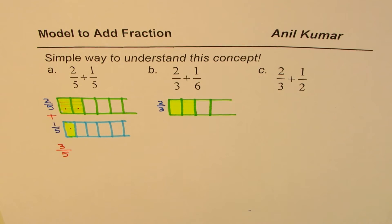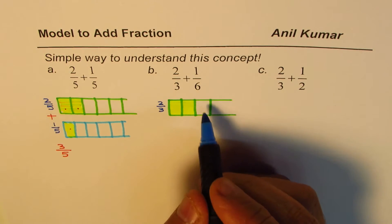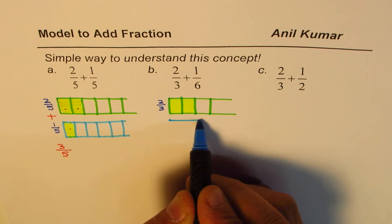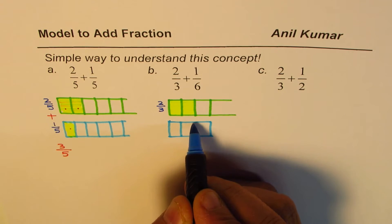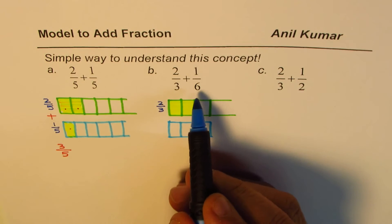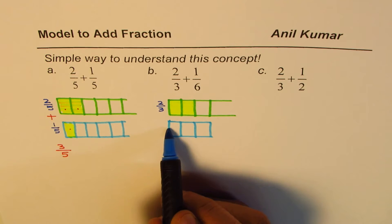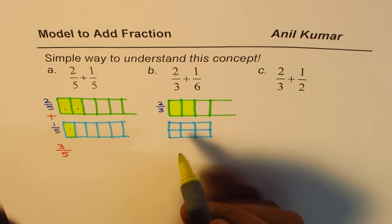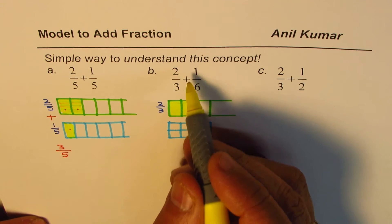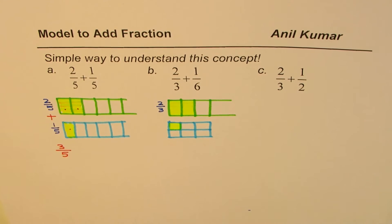Now the second rectangle is 1 out of 6. Let us maintain the same size. It is important to maintain the same size. So I'll divide it into first 3 parts: 1, 2 and 3. How do I divide it into 6 parts? Well, I can draw a line in the center. In that case, I have divided this whole into 6 parts and I have to select 1 out of it. So that becomes 1 out of 6.